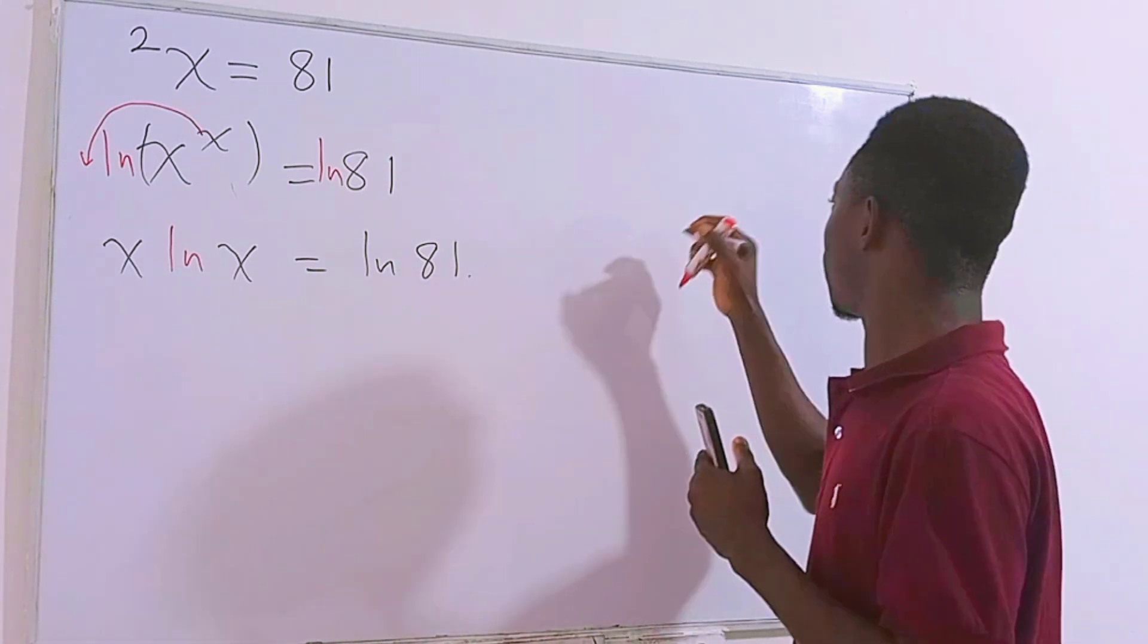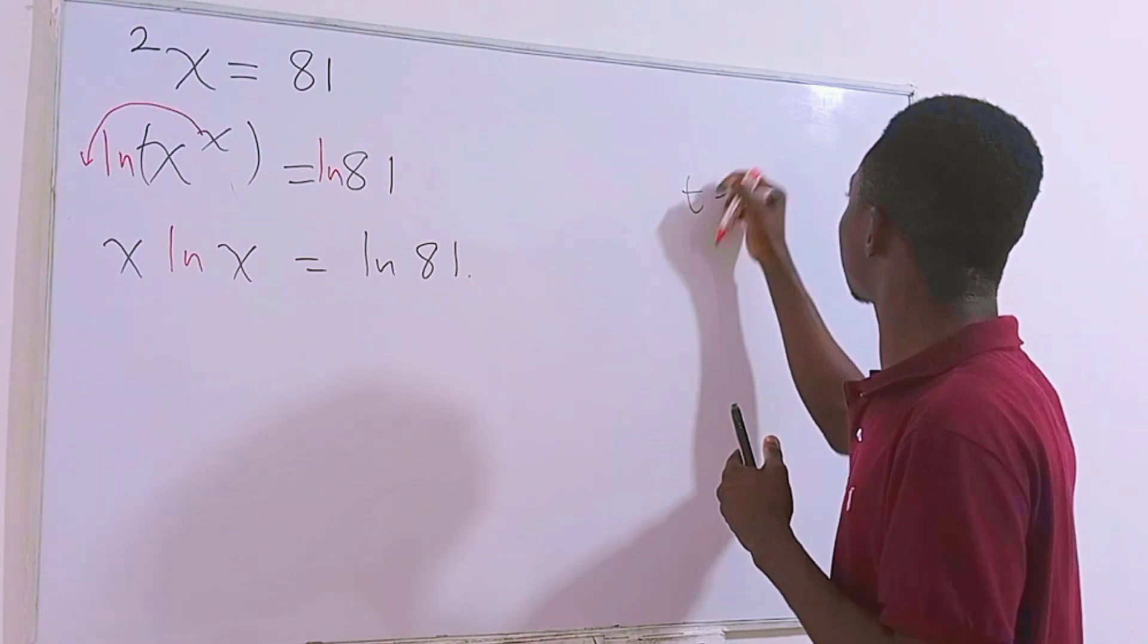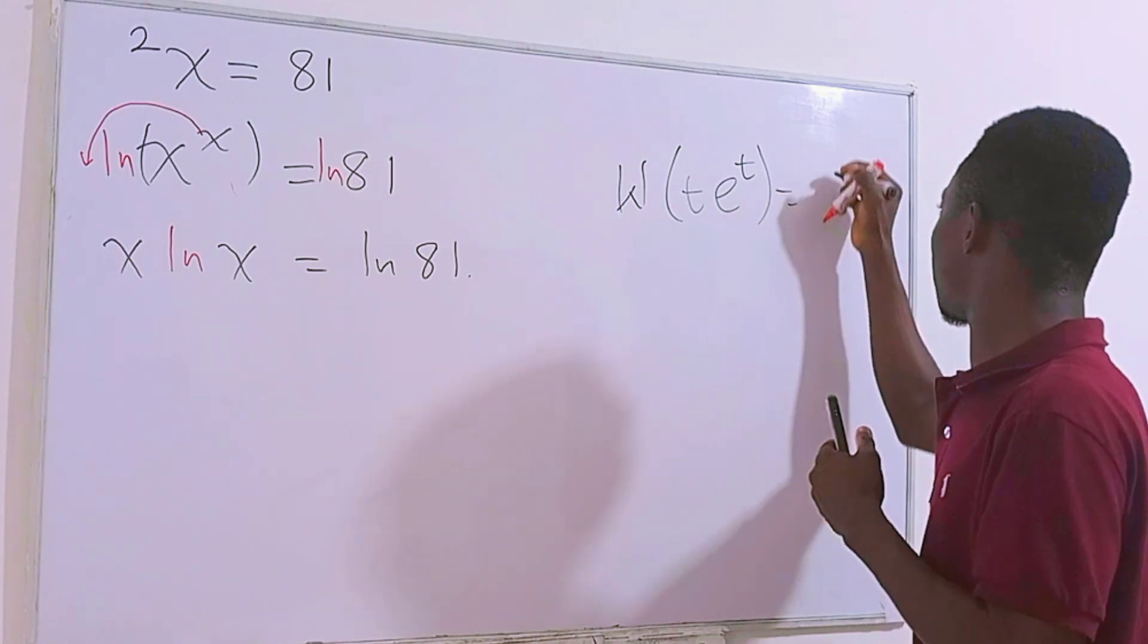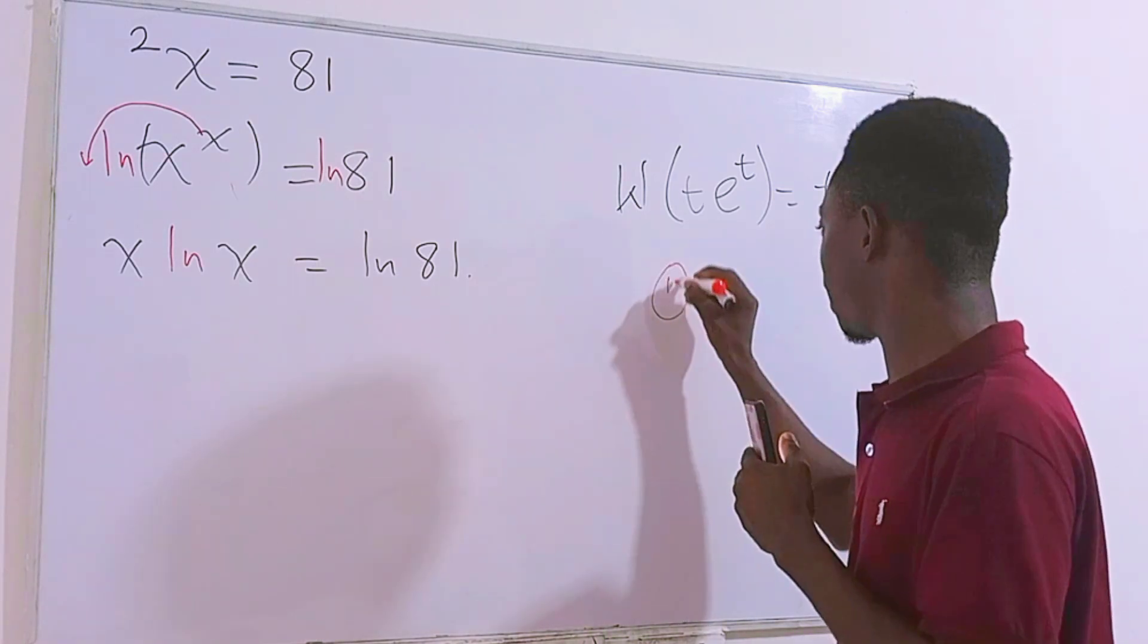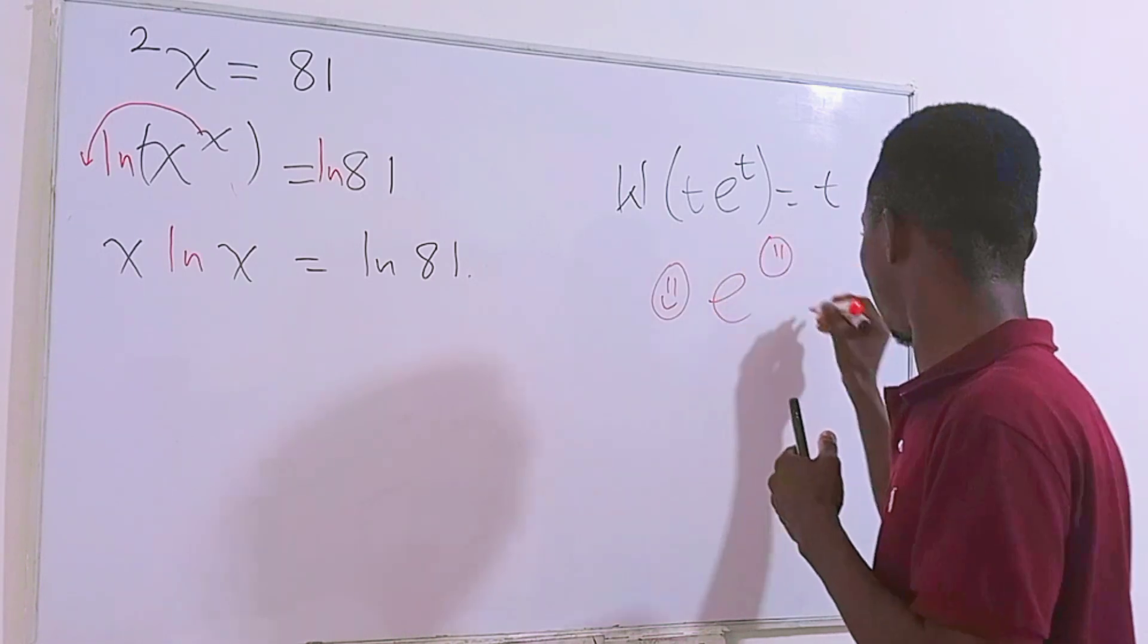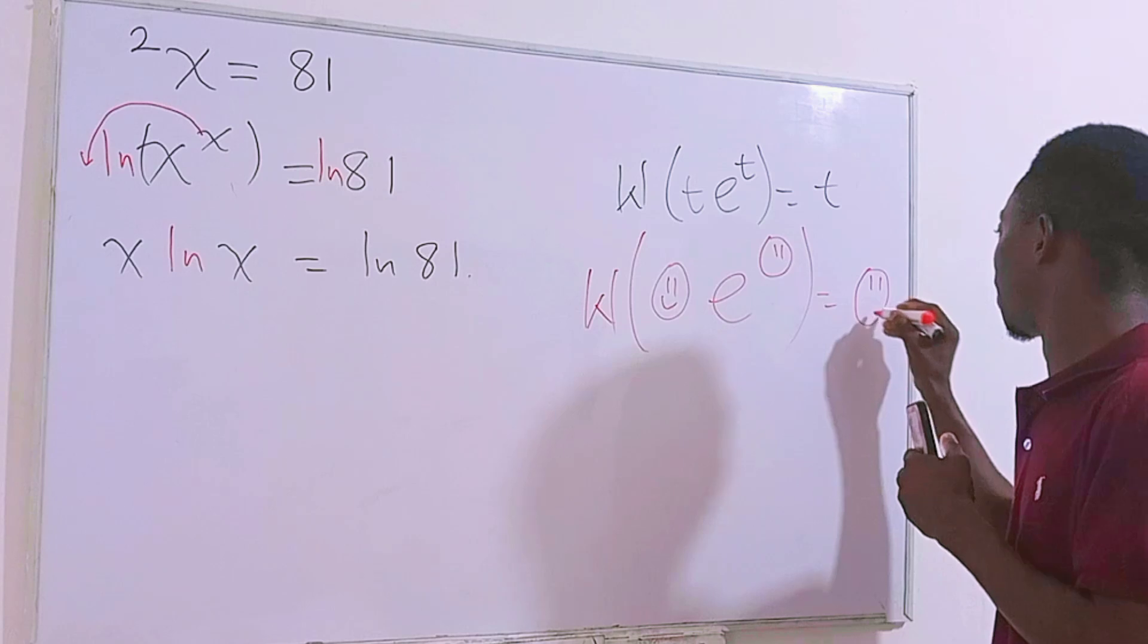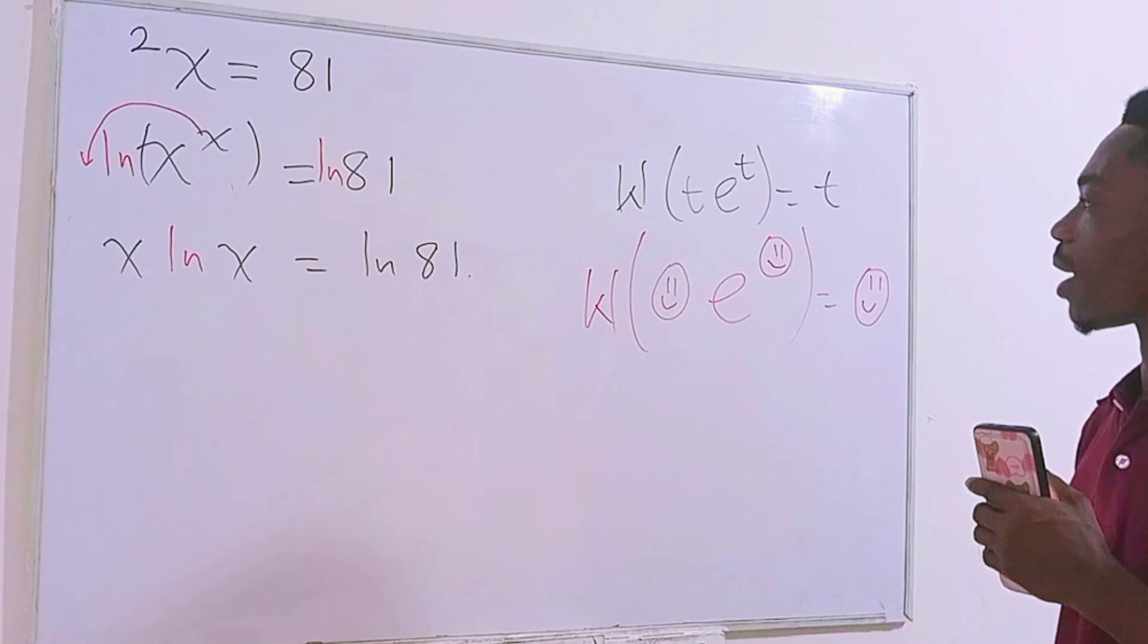This function is pretty nice to me because if you have any function like this t times e to the power t as soon as we take Lambert W function on this we'll still be getting our t back. Like the example that I did previously if you have anything at all it can be anything times e raised to the power that then if you take Lambert W function on this you'll still be getting that thing back as that. Pretty interesting one.